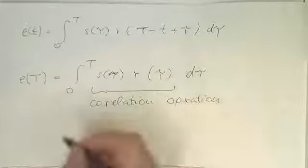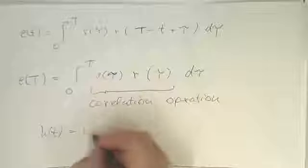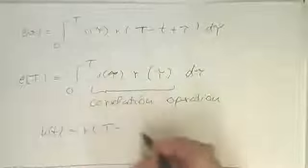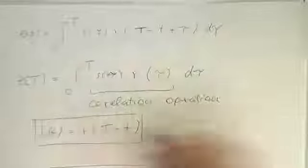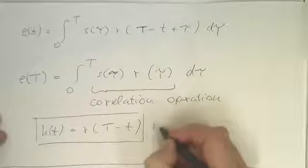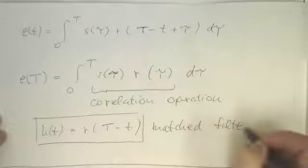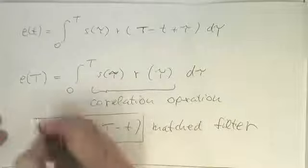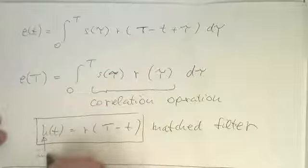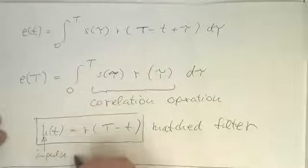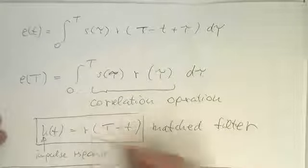And so the definition of this here, this H(t), this was our impulse response. This is R of T minus small t. This here is called matched filter. So this means the impulse response here. That's our impulse response. It's just a time reversed template.